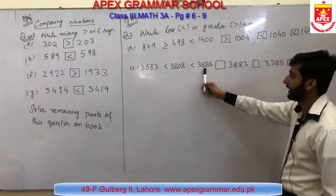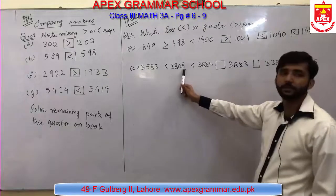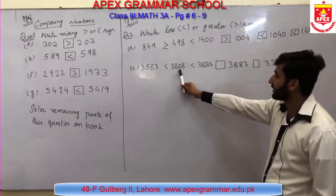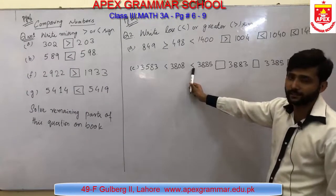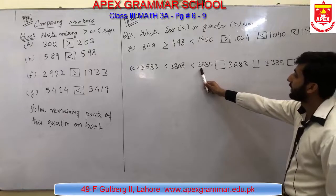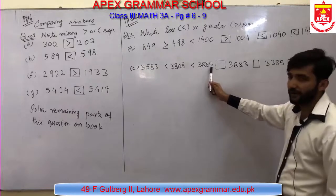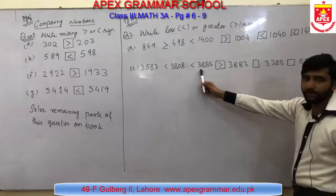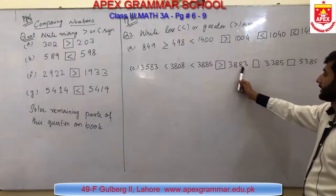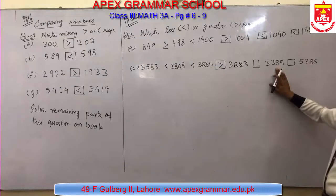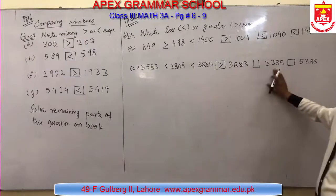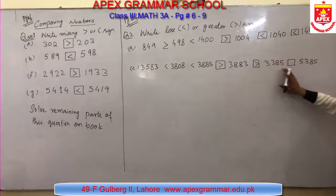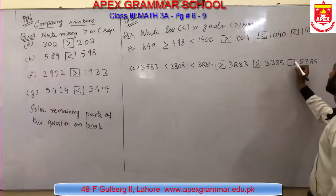Next in part C: 3808 then 3885 — both are in the 3800s, but 3808 is less than 3885 because 85 is greater than 8, so the sign is less than. Then 3885 and 3883: 85 is greater than 83, so 3885 is greater than 3883 — place greater than. Next, 3883 and 3385: 3800 is greater than 3300, so greater than. Last: 3385 and 5385 — 33 is smaller, so less than sign.